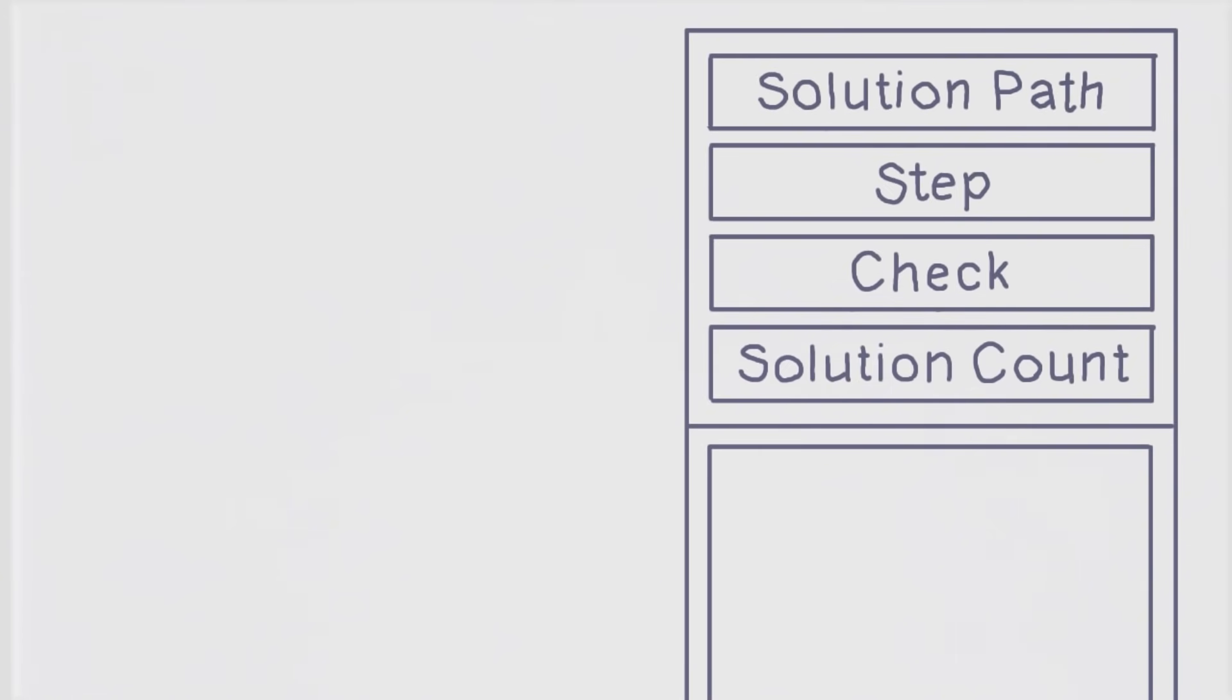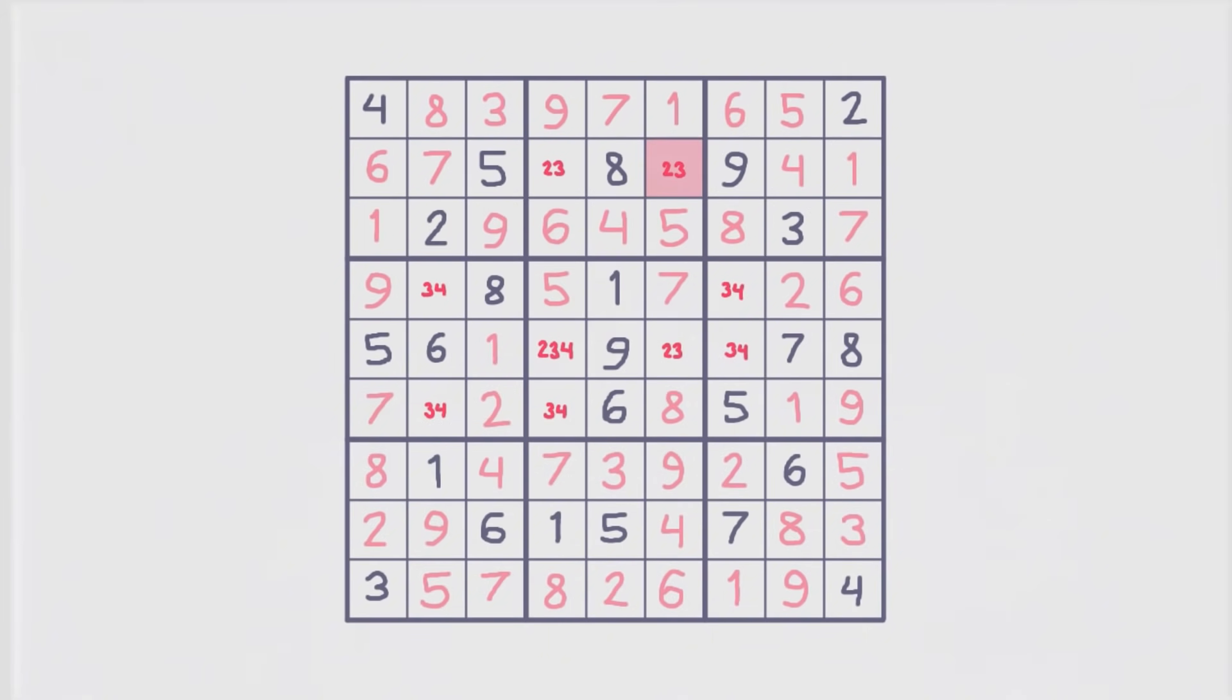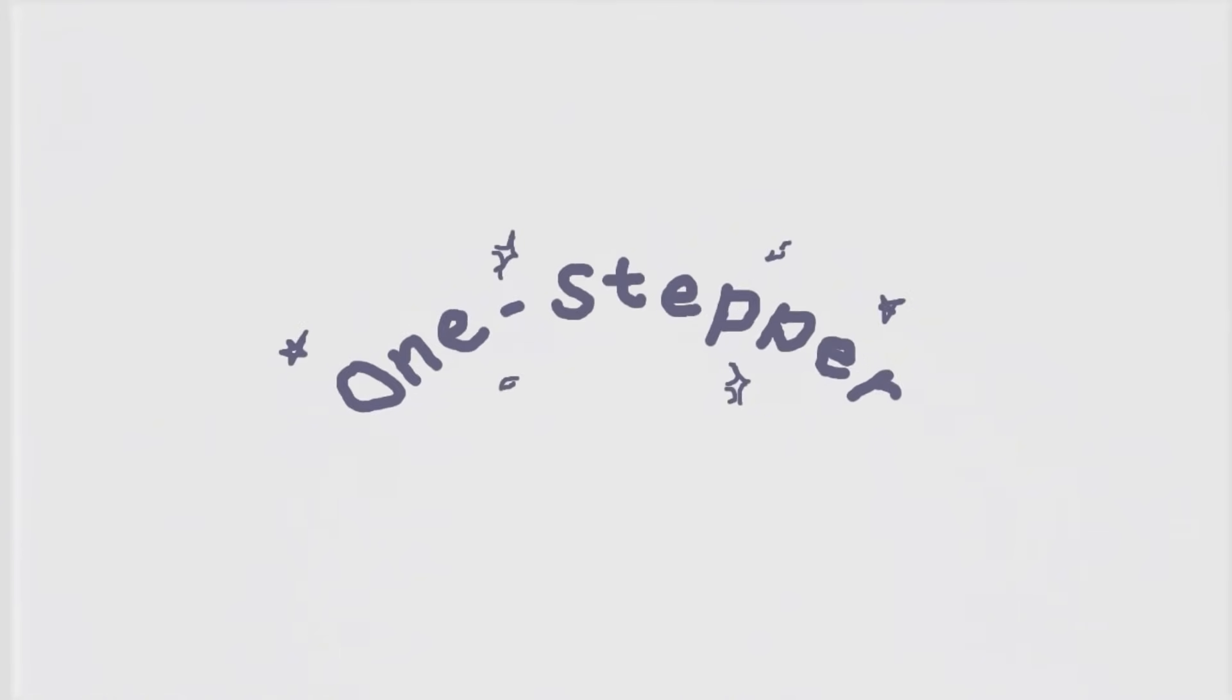But when I placed a 1 in row 8 column 4 and I ran the solver, I was brought down to just three solutions, and I got incredibly lucky because the final deadly patterns lied on the rotationally symmetric cells. So I was able to add a 2 in row 2 column 6 and it was unique, and one step. Now that doesn't always mean it's a success though, but it's very exciting when you get this result, because it leads right into the final stage of the process.